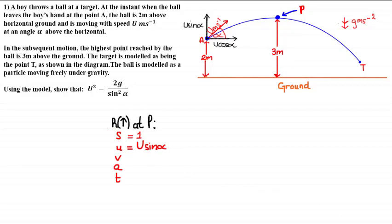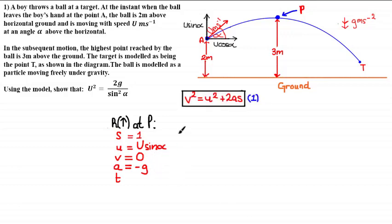From the diagram, the initial velocity in the vertical sense is u sine alpha. Since we've chosen to model the particle at point P, which is the highest point reached by the ball, the final velocity v is equal to zero. And since we've chosen upwards as positive, our acceleration due to gravity is negative g meters per second squared. So by considering the vertical motion at point P, we have values for s, u, v, and a, which we can substitute into the equation v squared equals u squared plus 2as.